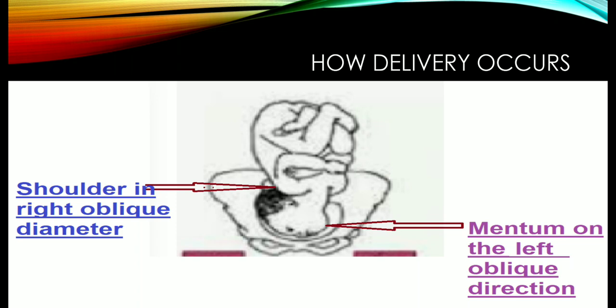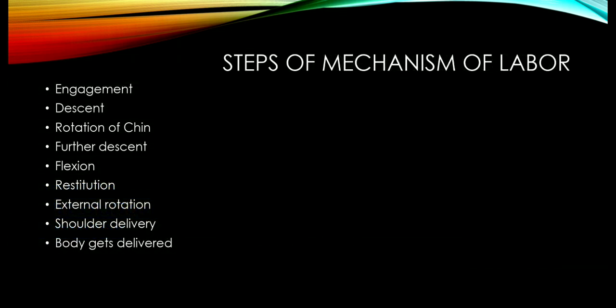When the head comes down in face presentation, the mentum is either in the right or left oblique direction. Here the mentum is on the left oblique direction. The shoulder will be on the opposite side — here the shoulder is in the right oblique diameter. So if the mentum is on the left oblique diameter, the shoulder will be on the right oblique diameter, or vice versa.